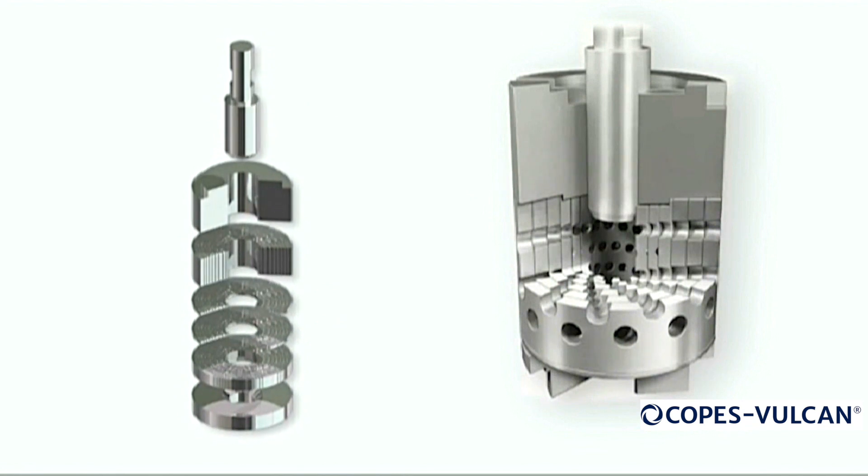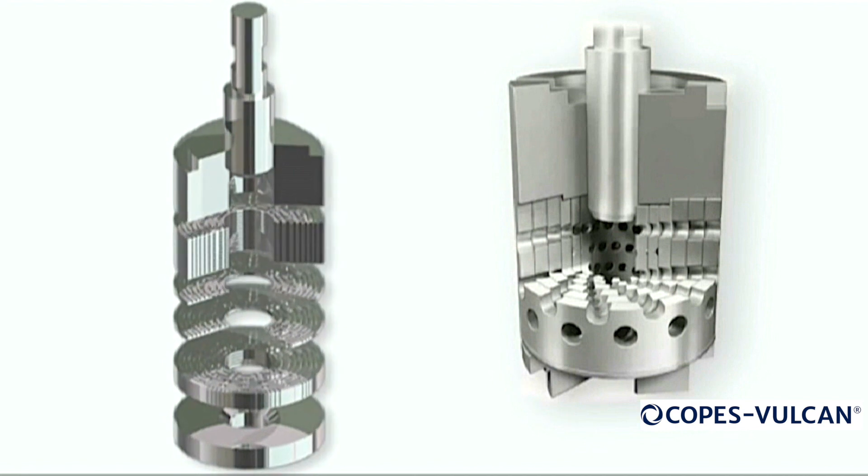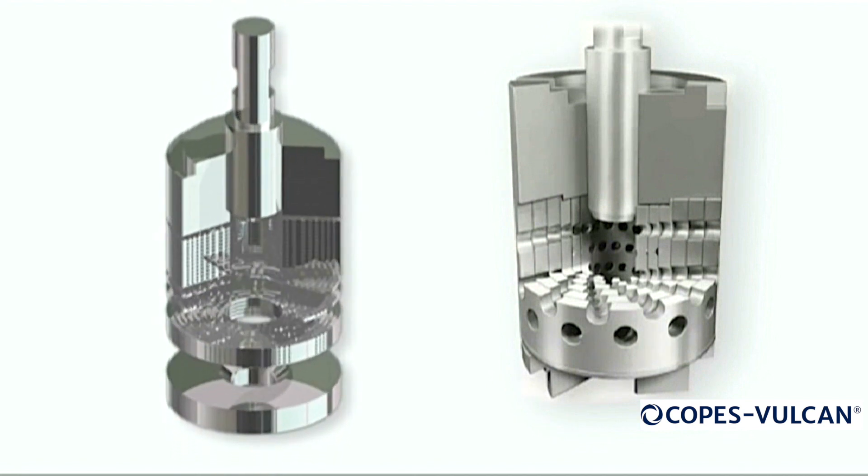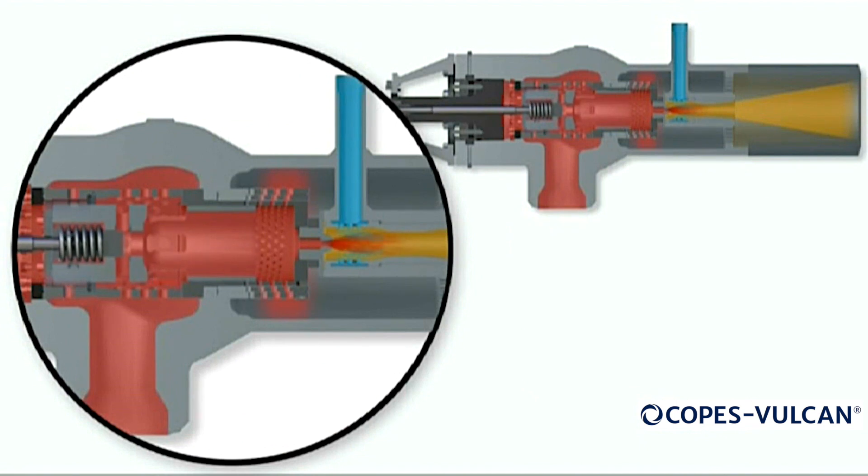Copes Vulcan can supply the DSCVSA steam turbine bypass valve with its industry-proven active noise attenuation trim styles, single and multi-stage hush, or the multi-labyrinth multi-disc Raven. The pressure-reduced steam exits the cage into the outlet section of the steam bypass valve.